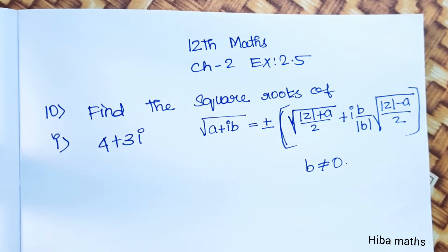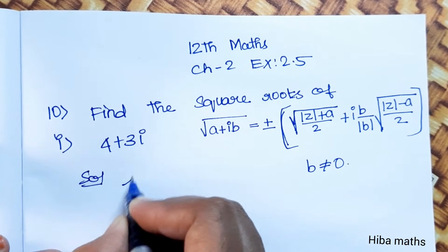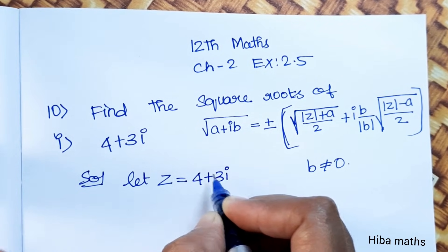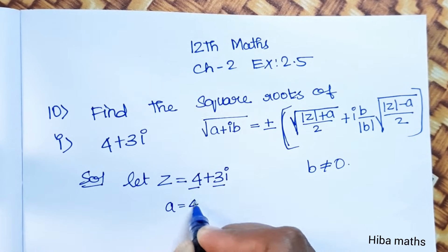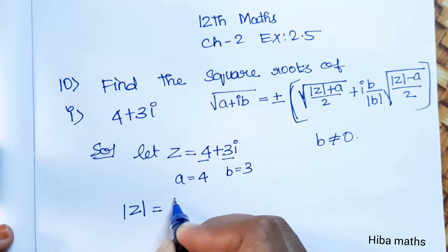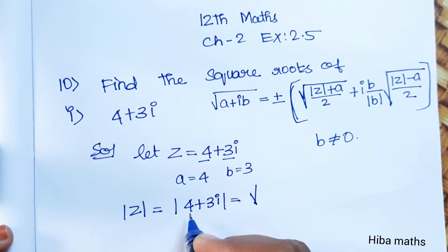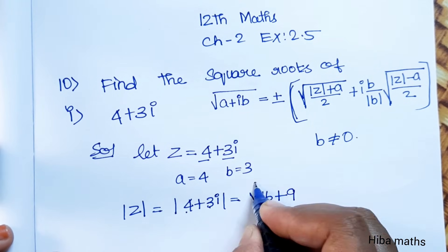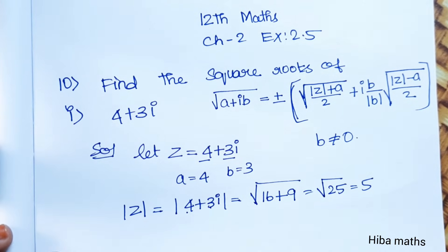The first question is: find the square root of (4 + 3i). Solution: let z = 4 + 3i, so a = 4, b = 3. Mod z = |4 + 3i| = root of (4 squared + 3 squared) = root of (16 + 9) = root of 25 = 5.